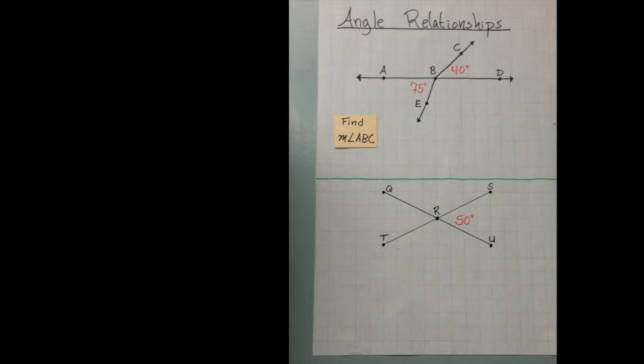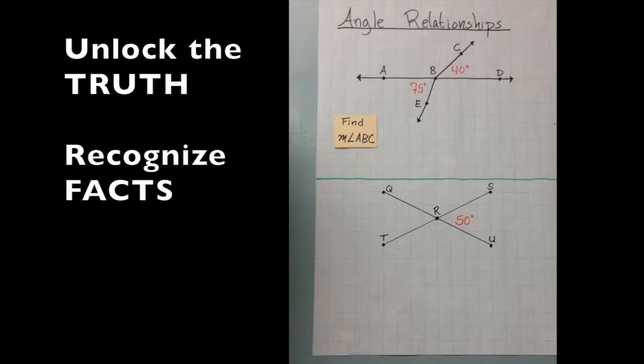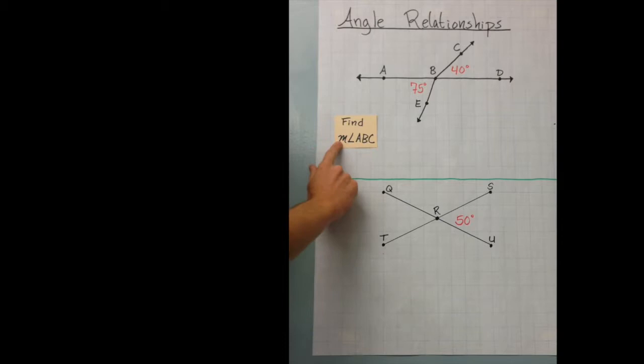Problems about relationships between angles can be tricky because usually you're not given a formula, you're not told how to solve it. You're just given a picture and then a little bit of information. So what you have to do is recognize as much truth or as much factual information in the picture as possible. So here's what we have to do. Here's our mission.